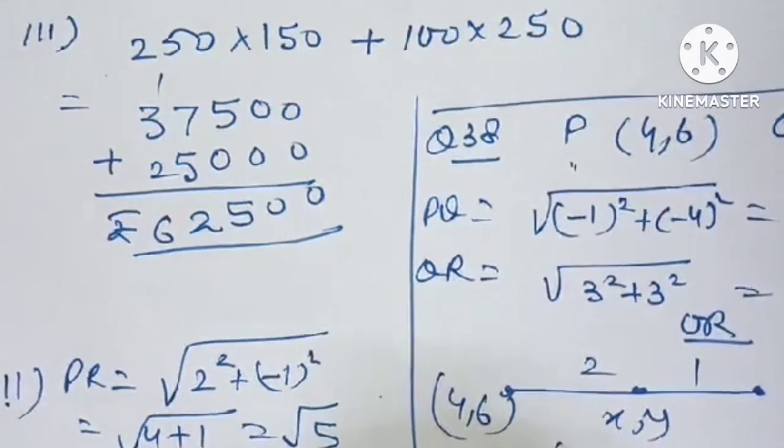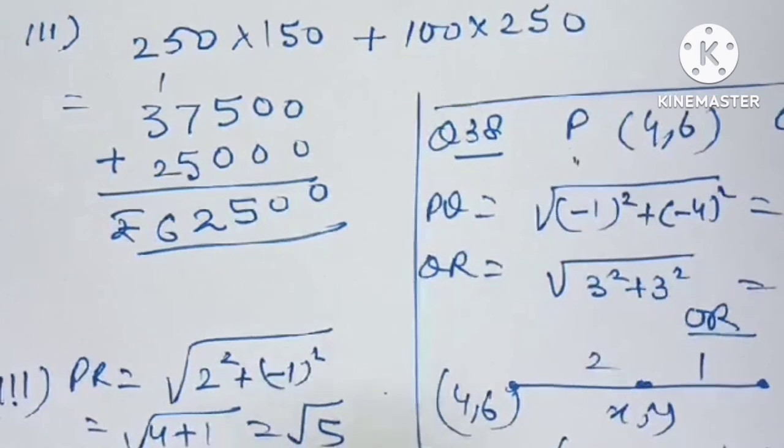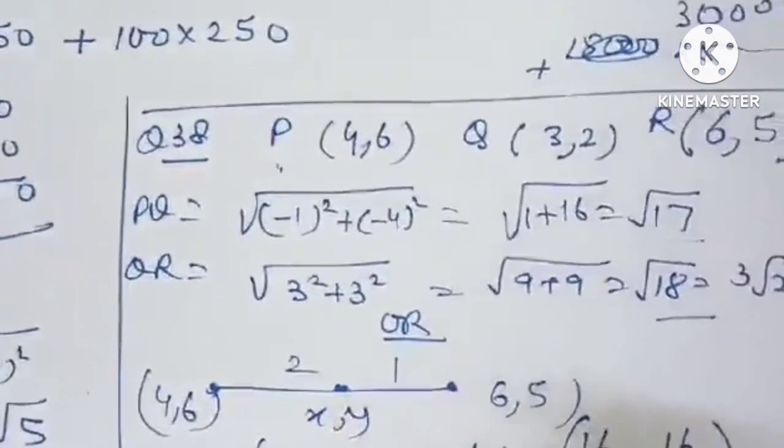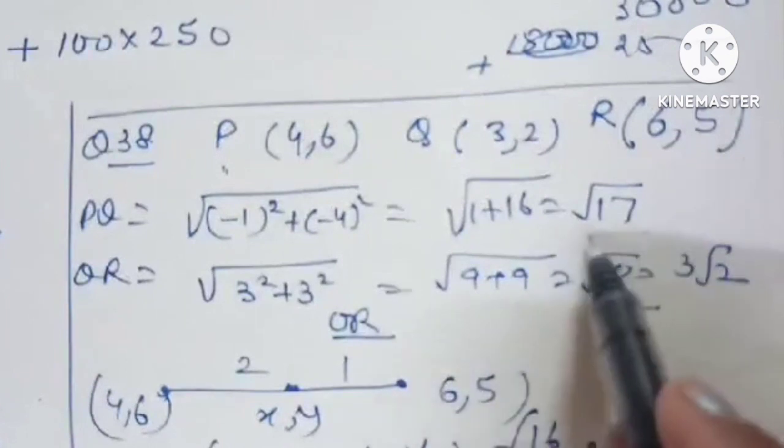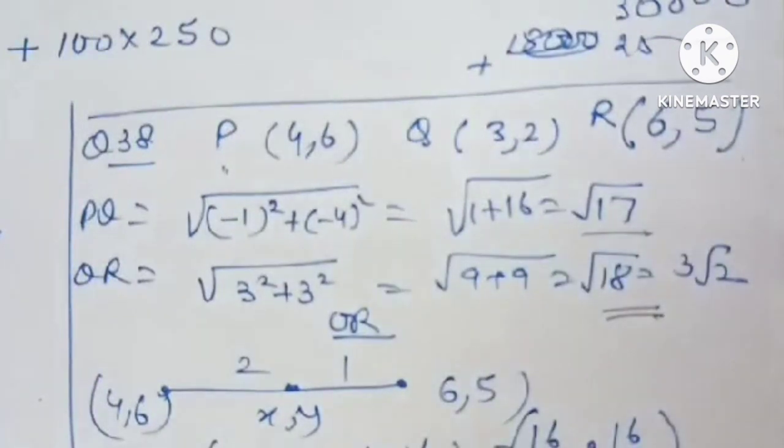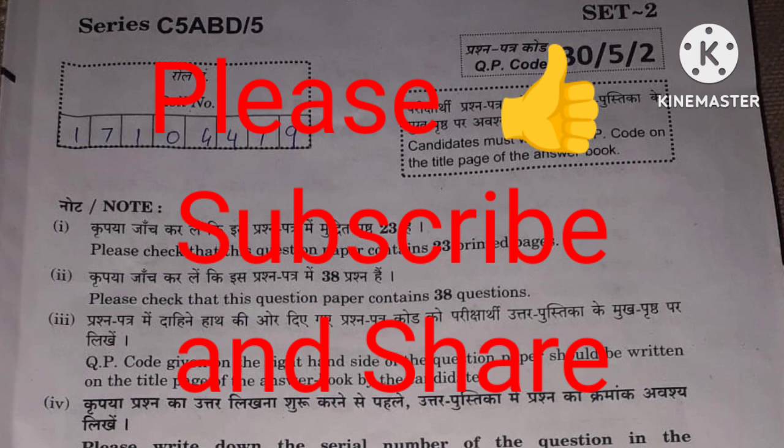For the third part, we need to tell whether it is isosceles or not. So we find out PR is equal to root 5, and we see that already we have taken out PQ and QR. So it is not an isosceles triangle we can say. So I hope you all score well. All the best for your future. Thank you so much for watching.